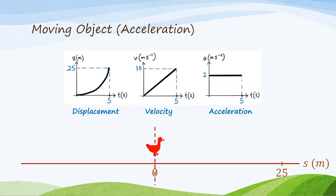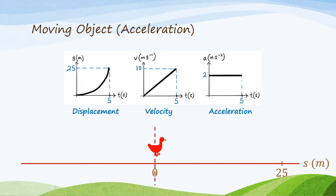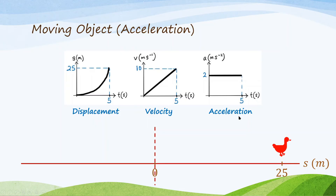For a moving object with acceleration, the duck is accelerating to the right — it becomes faster and faster. The duck moves from the origin to 25 meters. So the displacement graph increases from zero to 25 meters, and the displacement graph is curving upward because the velocity increases. The gradient of the displacement graph is the velocity, so as velocity increases, the gradient also increases. The velocity increases from zero to 10, becoming faster and faster — there is acceleration.